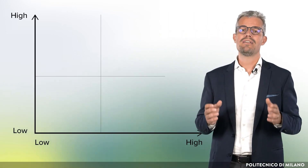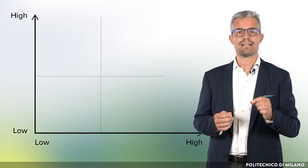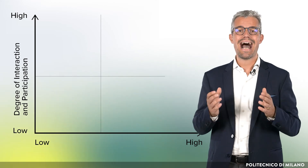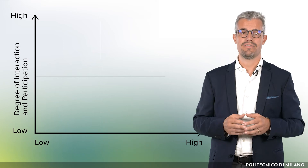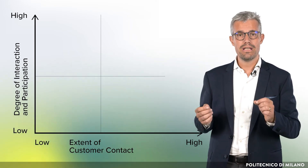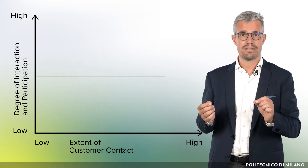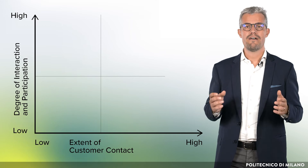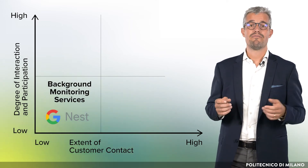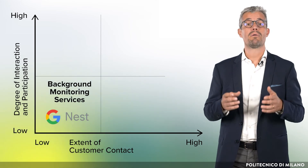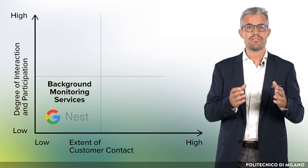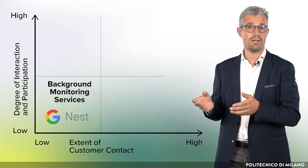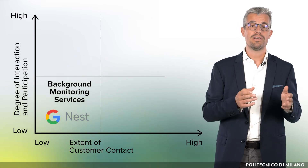We can identify two main variables in these services that allow us to classify them. On one hand, the degree of interaction and participation — how active the user must be to receive a personalized service. On the other hand, the degree of user contact — when the service observes, even in the background, the direct behavior of the user. If both variables are low, we have background monitoring services, such as Nest — the smart thermostat — which, given few inputs like desired temperature, creates a personalized heating profile by observing behavior such as when you are home or when you go to sleep, claiming to reduce expenses by nearly 20%.